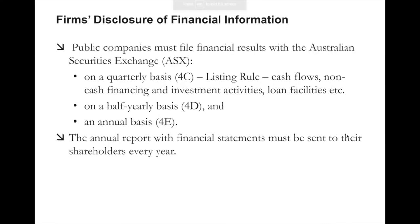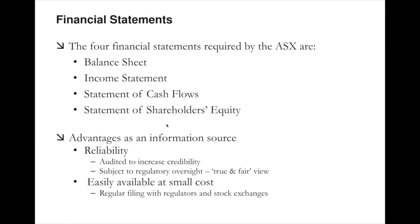As a listed company on ASX, you need to file financial results so that key financial metrics are available to the public, not just to existing shareholders. Naming convention depends on the frequency: quarterly basis is 4C, half-yearly basis is 4D, and annual basis is 4E. January to March is the reporting season for half-year reports, and July to September is typical for annual reports in Australia. The four financial statements required by ASX are balance sheet, income statement, statement of cash flows, and statement of shareholders' equity.